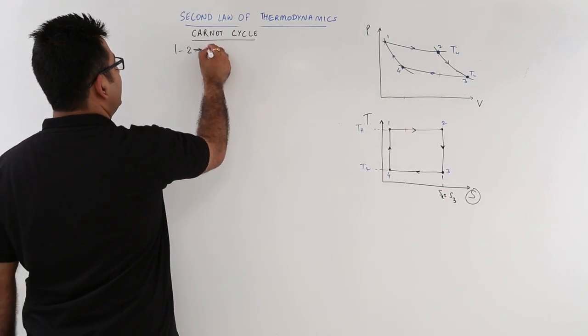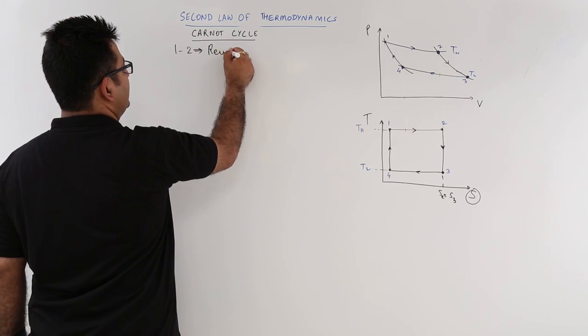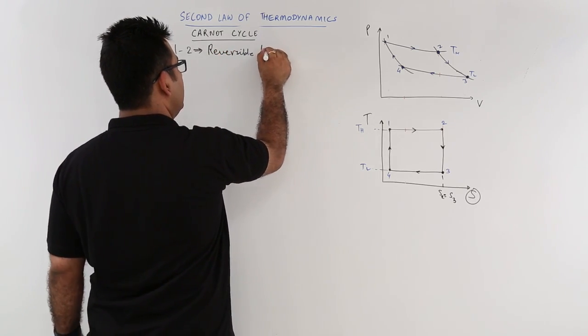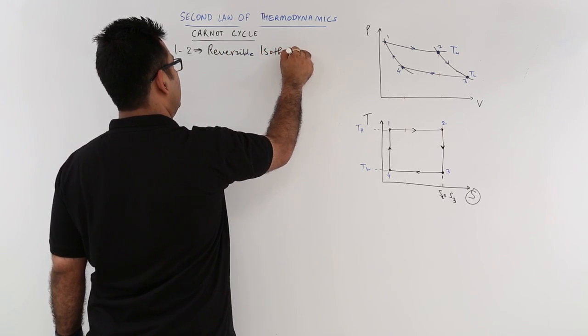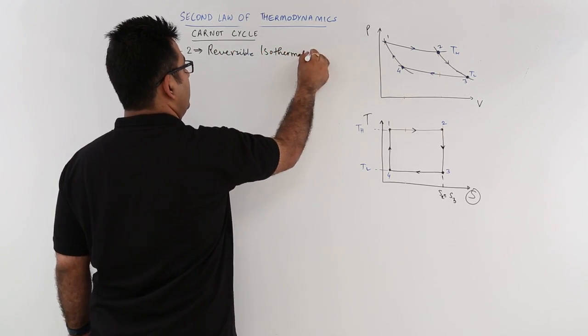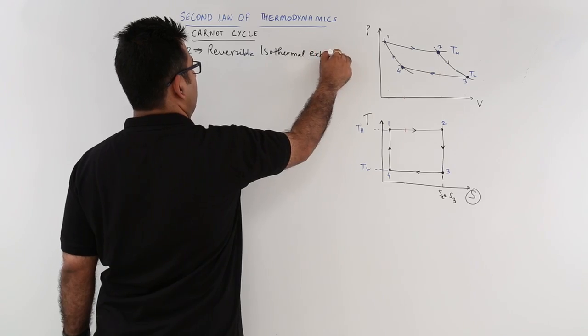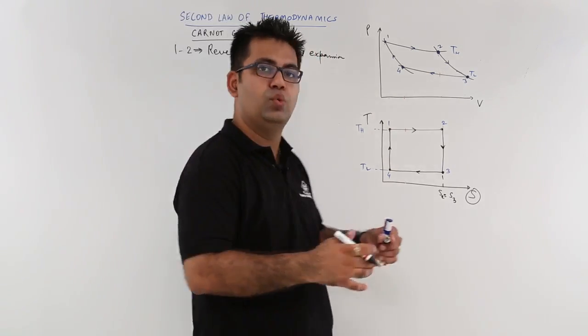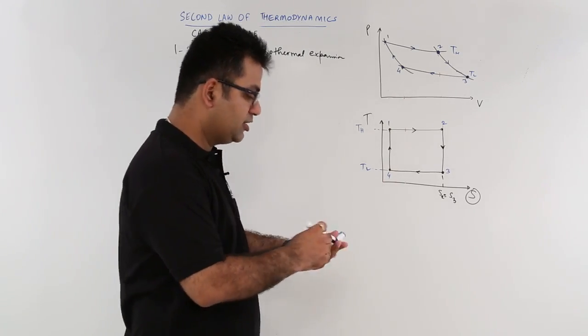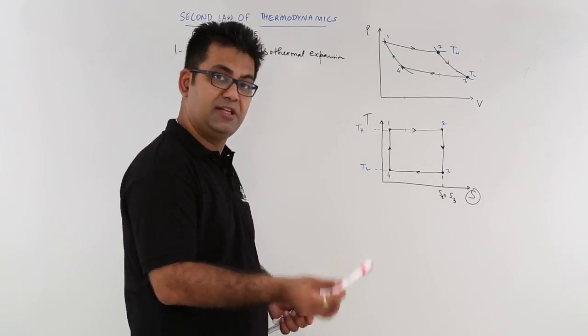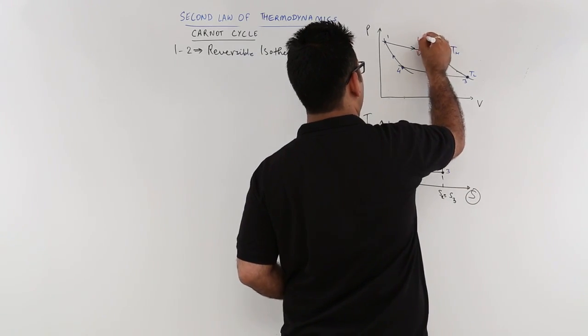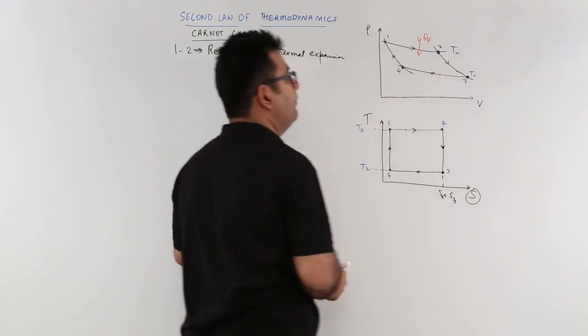So 1 to 2 is a reversible isothermal expansion because the volume is increasing. During this expansion, the gas cools down. As the gas cools down, it becomes easier for it to absorb heat. So you have some heat absorption at temperature Th.